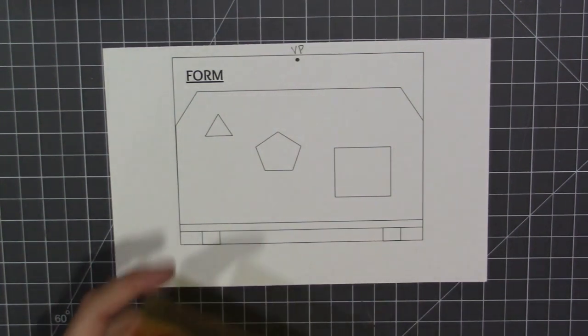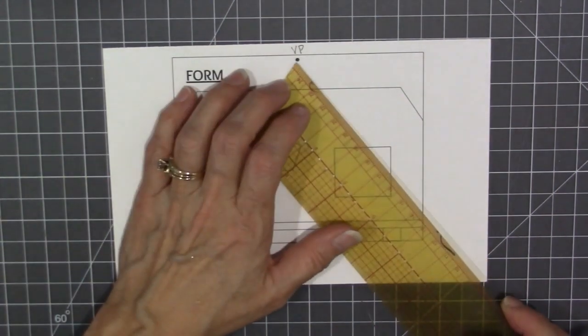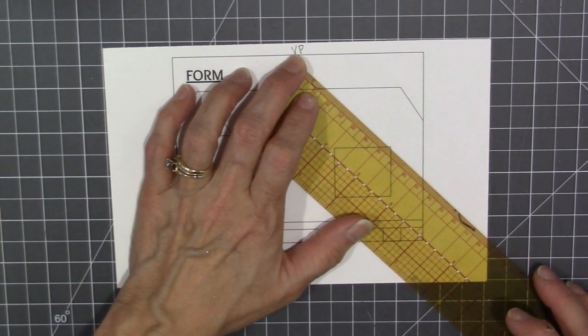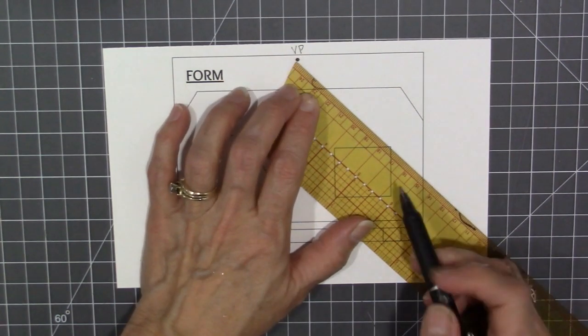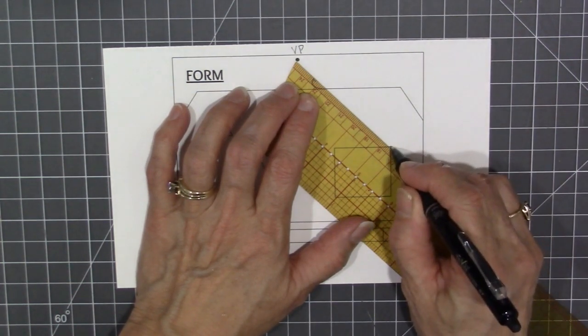I'm going to take a straight edge and start with the rectangle to turn it into a box by lining up your ruler with the vanishing point and each corner that does not draw a line through the shape itself to create the edges of the box that are moving further away.